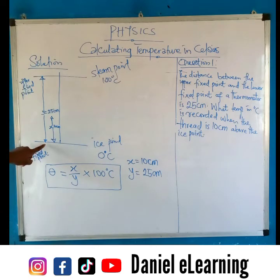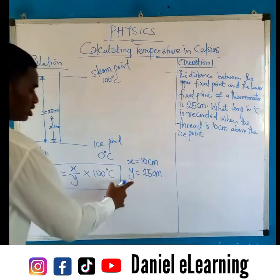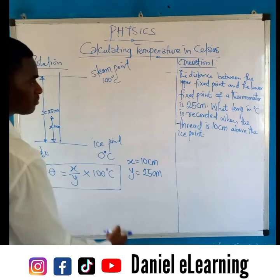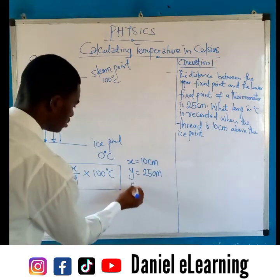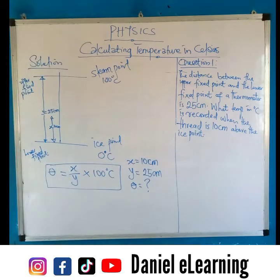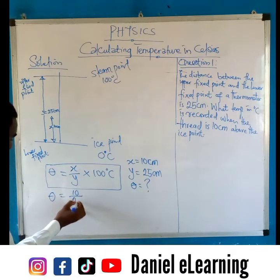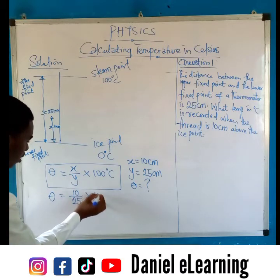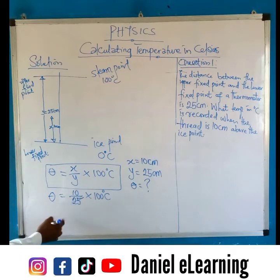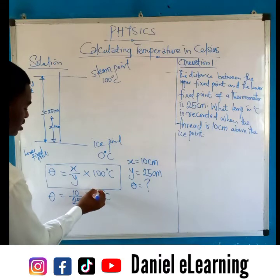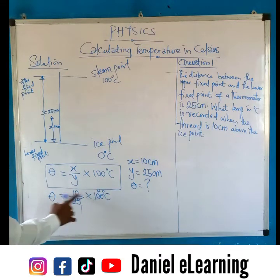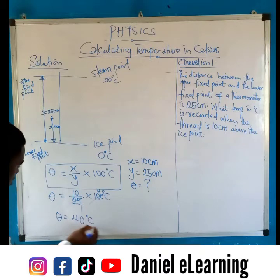The distance between the upper and lower fixed points is called the Fundamental Interval, which is Y. Theta is unknown. Applying the formula: Theta equals 10 over 25, multiplied by 100°C. Simplifying: 100 divided by 25 is 4, then 10 times 4 equals 40°C. So the temperature recorded is 40 degrees Celsius.